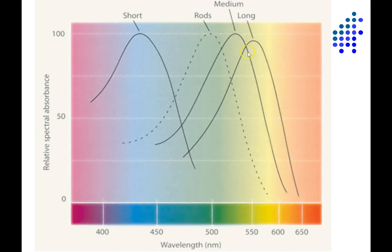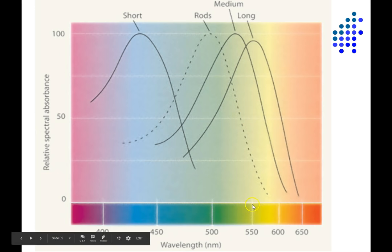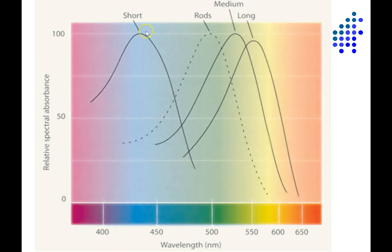You can see that an object that bounces back 550 nanometer light, what we would normally perceive as something like yellow, would activate the medium and long wavelength cones about the same, and not activate the short wavelength cones at all.